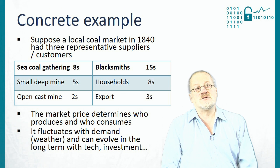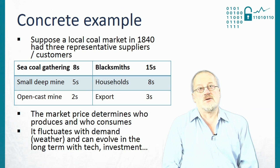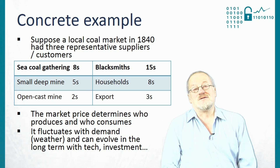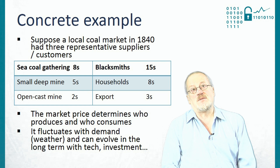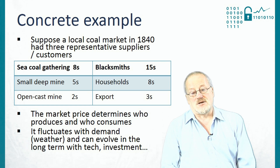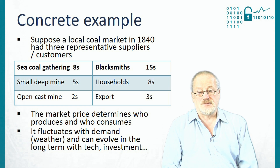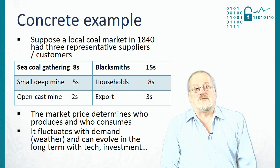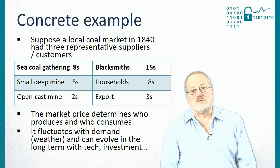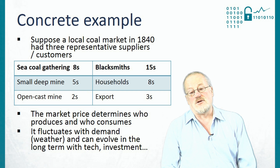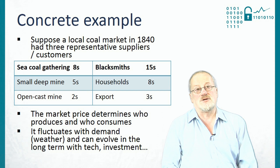The insight here is that the price of coal is set by the marginal demand and the marginal supply — the last supplier to come onto the market and the last customer to be satisfied. And demand can fluctuate with exogenous factors such as weather, and can also evolve in the long term with technology and investment.